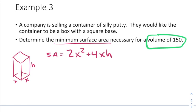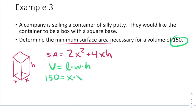That's why they told us that the volume needs to be 150. This is a constraint that's going to help us. So volume equals length times width times height. Our length and width are x and x, and our height is h. So our volume of 150 equals our length x times our width x times our height h. In other words, 150 equals x squared h.